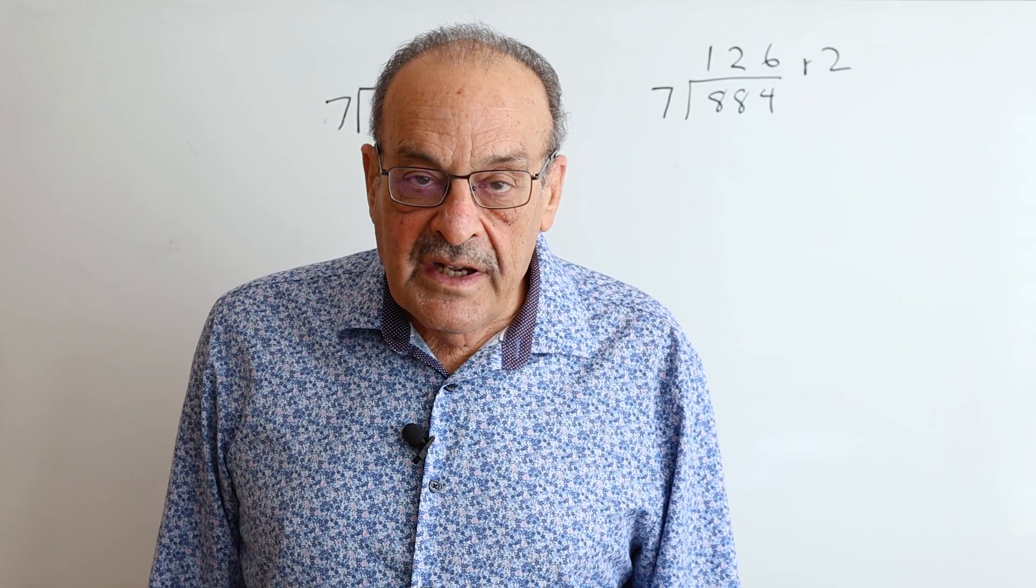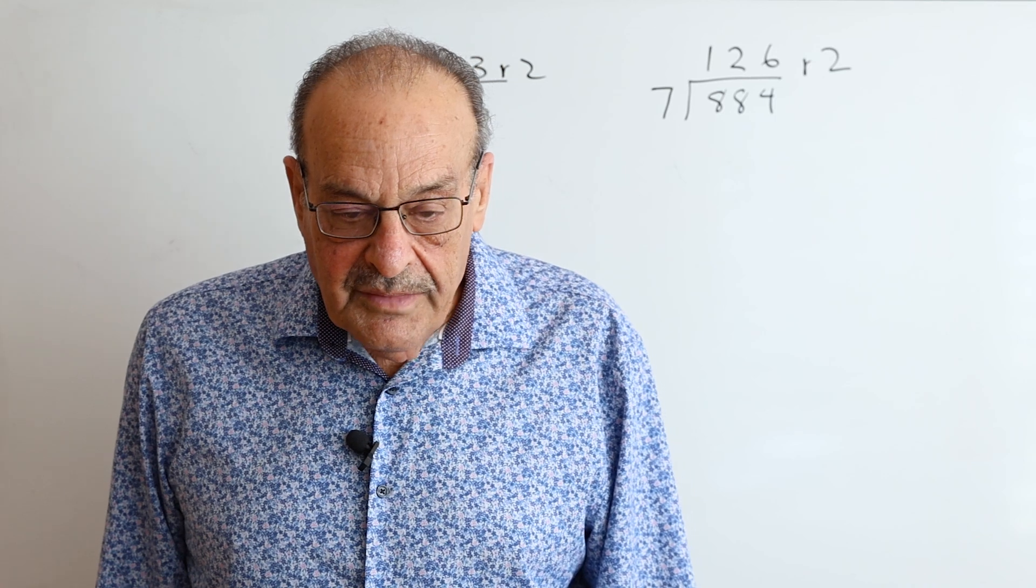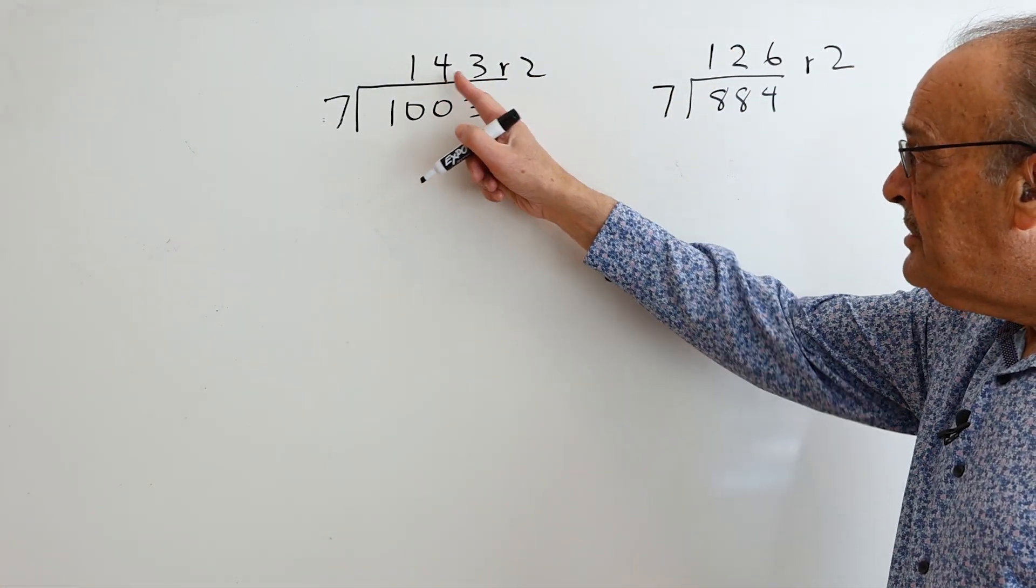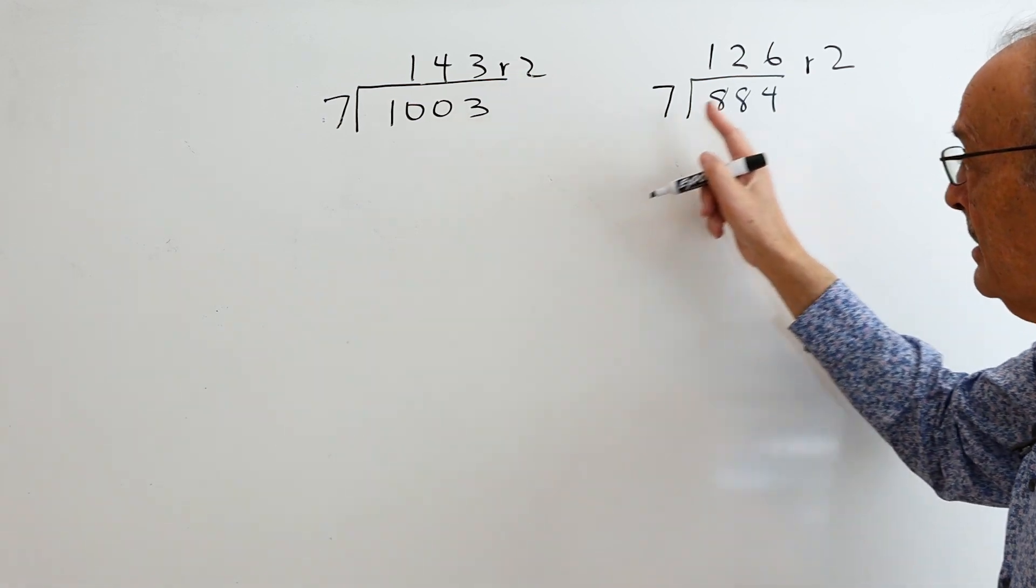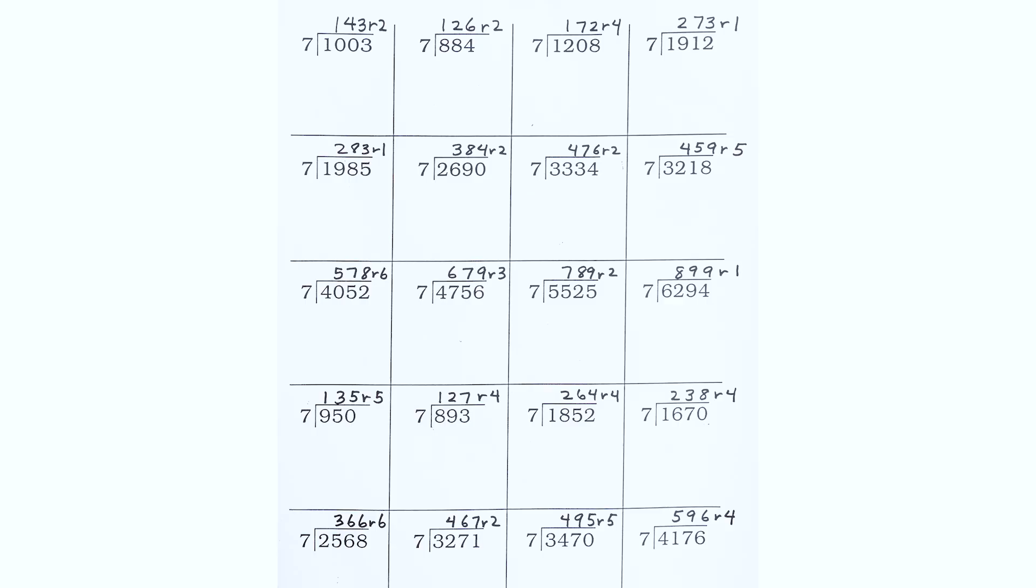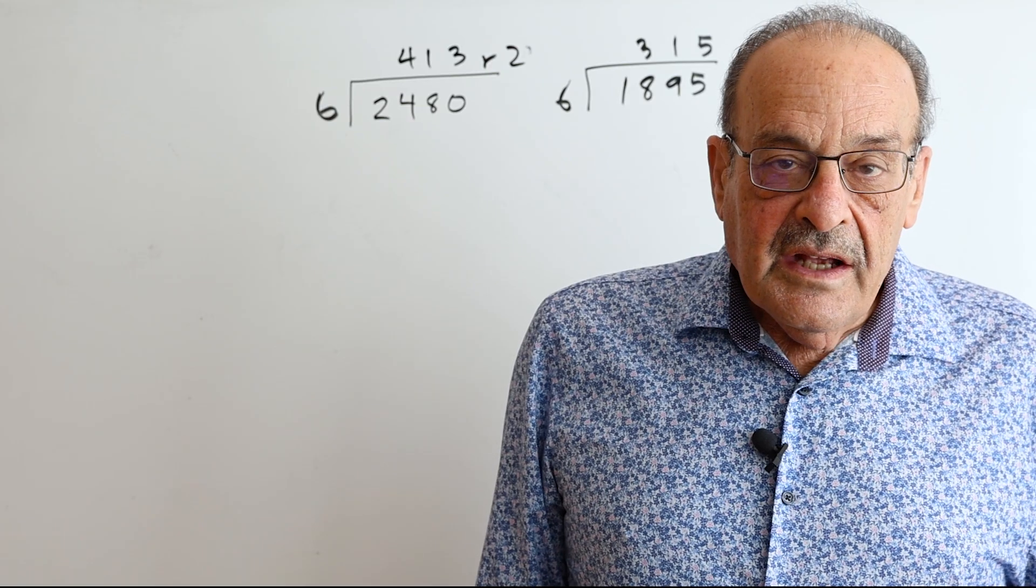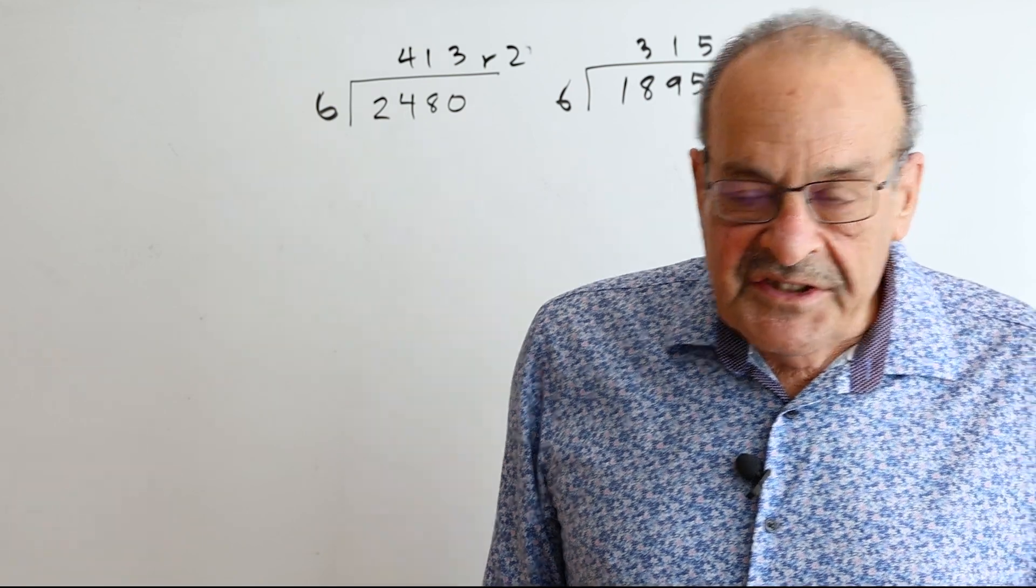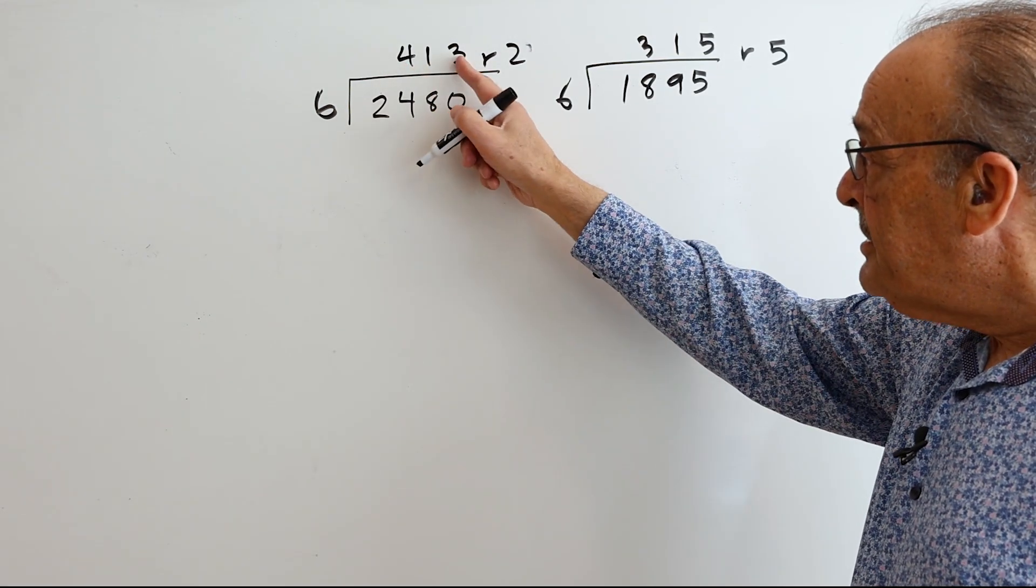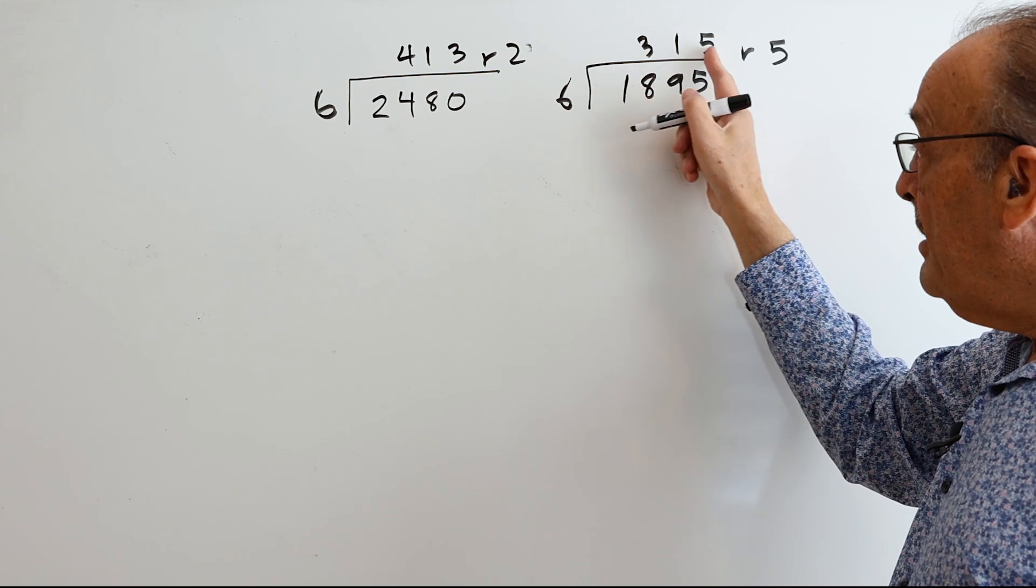I have a sheet where you're dividing a 4-digit number by 7 and notice the answer, 4 times 3 is equal to 12, 2 times 6 is equal to 12. And I have a sheet where you divide a 4-digit number by 6 and here we have 4 times 3 is 12 and 3 times 5 is 15.